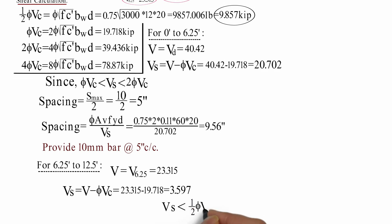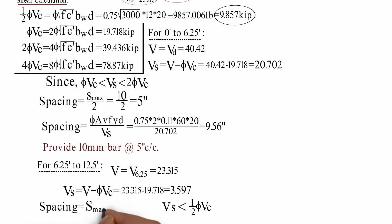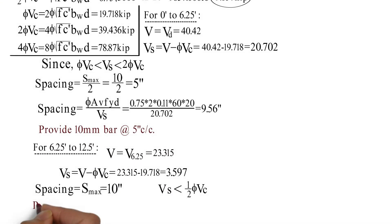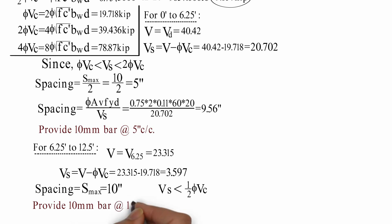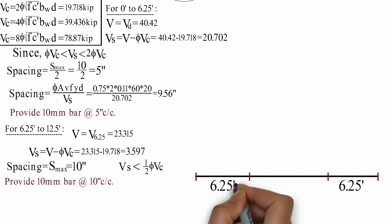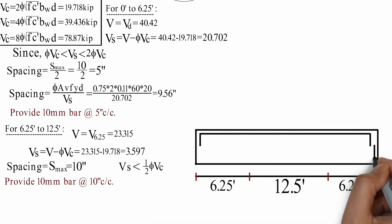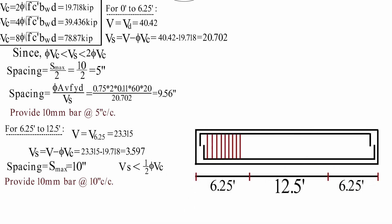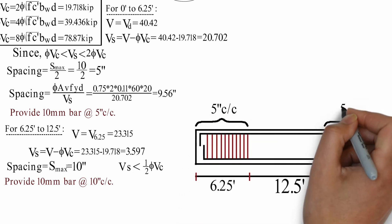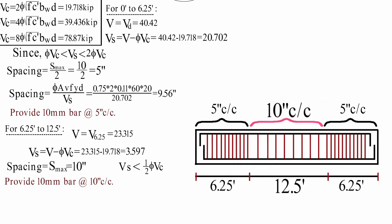At half 5 feet, since both formulas give less than the threshold, spacing equals S_max. S_max is 10 inches. Provide 10mm bar at center to center. 12 inches center to center distance.